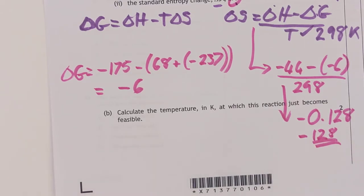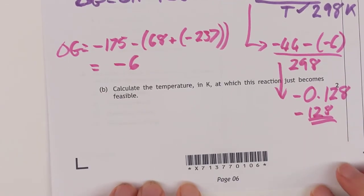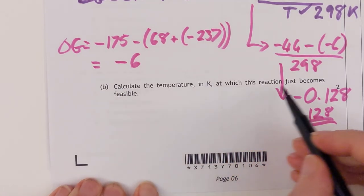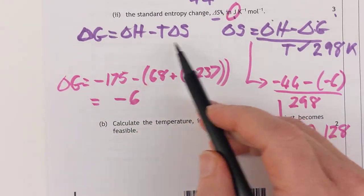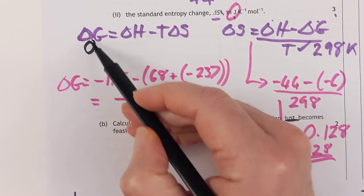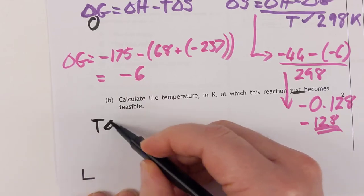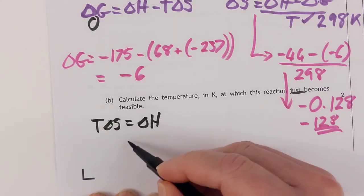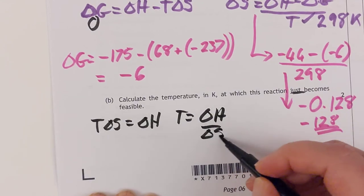Lastly, we are being asked to calculate the temperature at which the reaction just becomes feasible. The story with 'just becomes feasible' is when ΔG just becomes zero. So we're going to reuse this equation, only ΔG is now zero. And once again we're solving for T. So that means TΔS = ΔH, which means T = ΔH / ΔS.